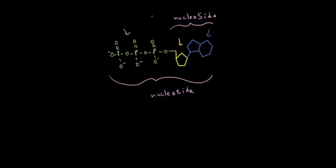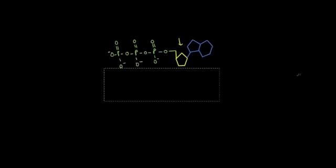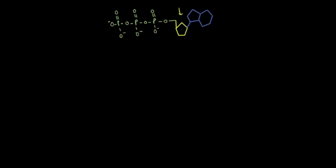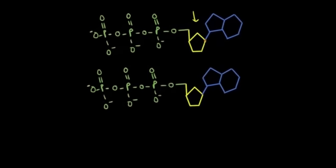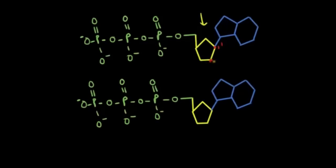DNA is going to be made up of these long chains of nucleotides strung together. So let's see how we put together two nucleotides. I'm going to quickly fill in the carbons on the sugar molecule, because it's pretty important to keep that in mind. So here's our 1 prime, 2 prime, 3 prime, 4 prime, and 5 prime carbons.